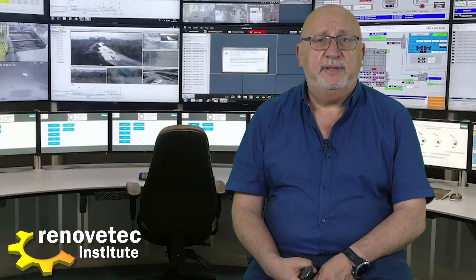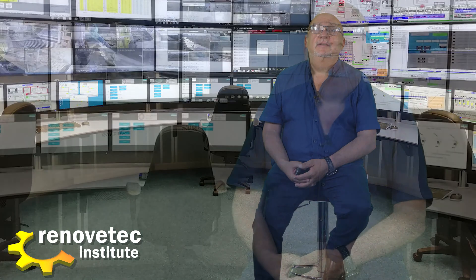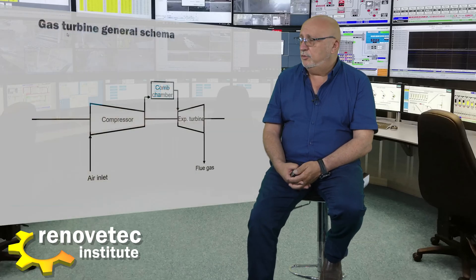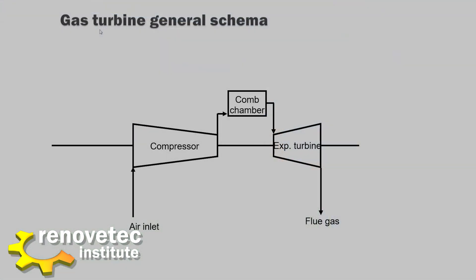A gas turbine has two main assemblies of elements. The first one comprises the main elements that form the main body of the turbine, and the second one is all the auxiliary elements that a gas turbine needs to work. The main three elements of the main body are the compressor, the combustion chamber, and the expansion turbine.